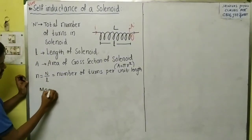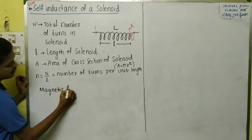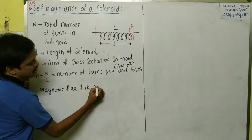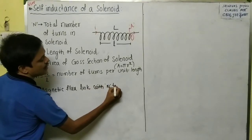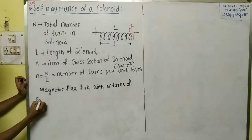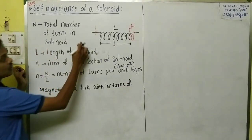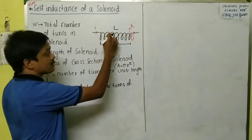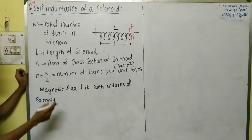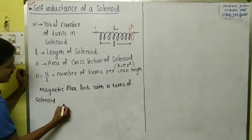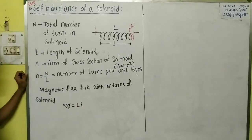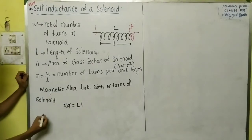To derive the formula, we need the magnetic flux linked with the solenoid. Due to the passage of current, the solenoid acts as a magnet and generates a magnetic field. The flux linked with one turn is φ, so the flux linked with N turns is Nφ. We also know that Nφ = L·I.